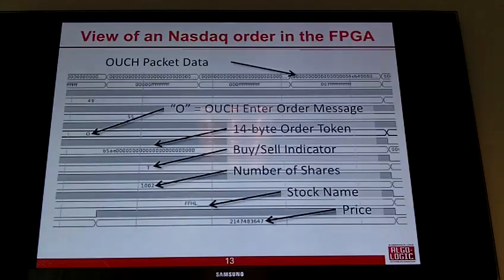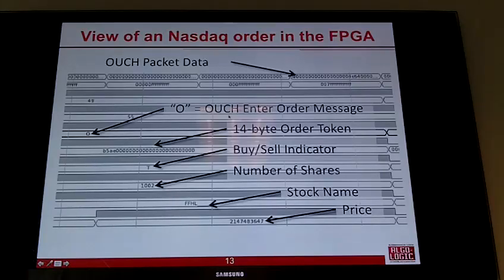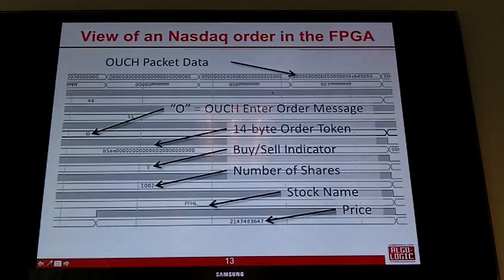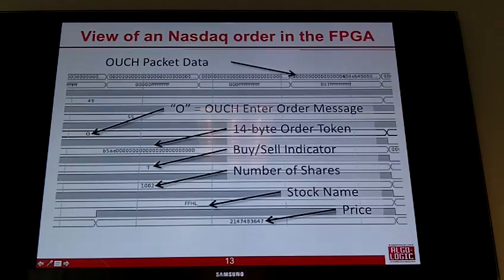Looking inside the FPGA with a ModelSim or iSim waveform, you can see an OUCH packet — a NASDAQ order with a 14-byte order token, buy-sell indicator, number of shares, stock name, and price — being processed on a 64-bit bus in just one, two, three clock cycles. As the packet streams through, we pick off the fields that make up the order and make a decision on what to do.